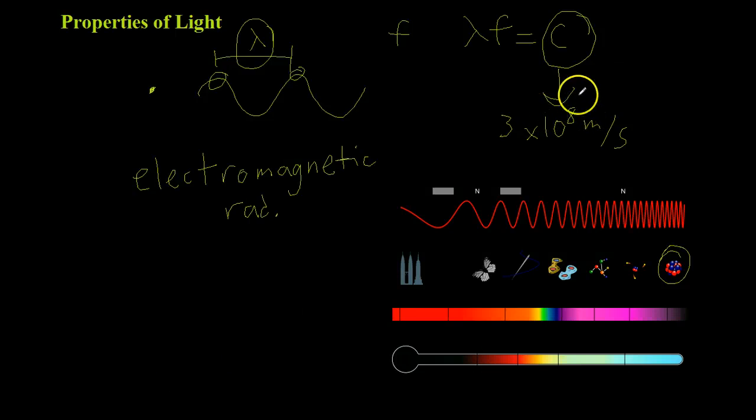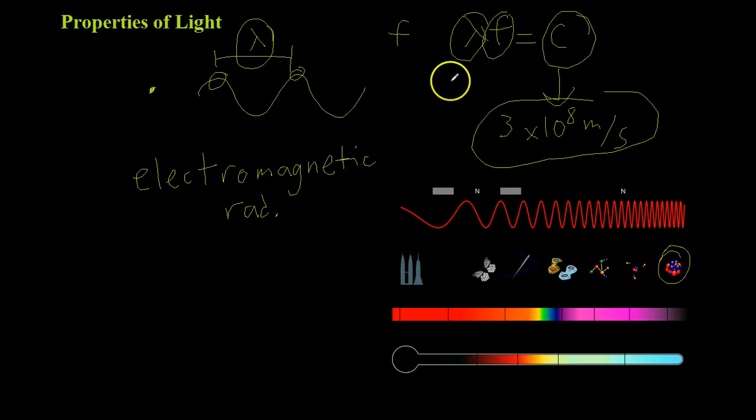Because C always comes out to be this number, it means that lambda and F, the wavelength and frequency, are inversely related, meaning that if one goes up, the other has to go down in order to maintain this constant.